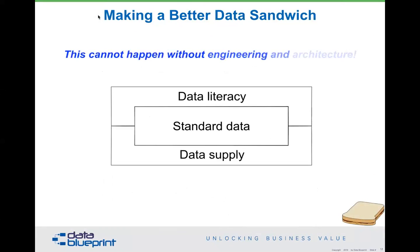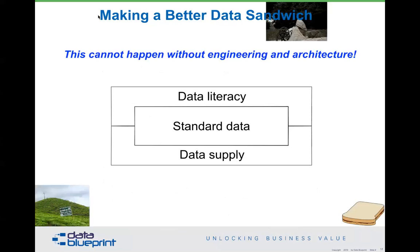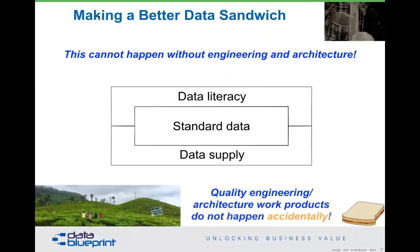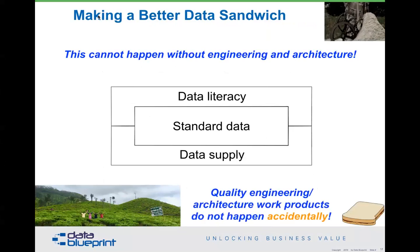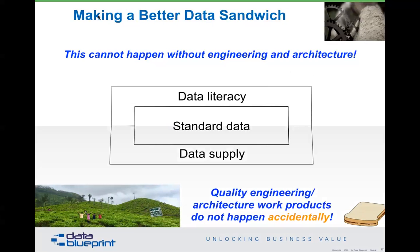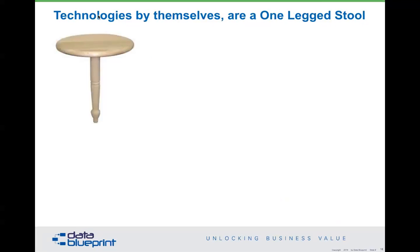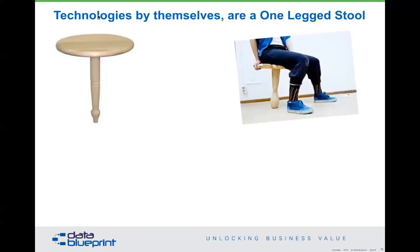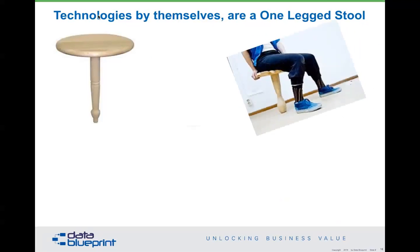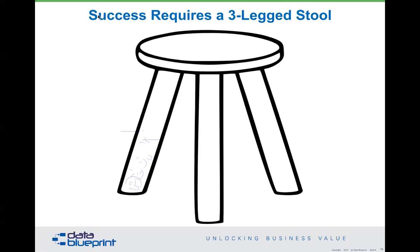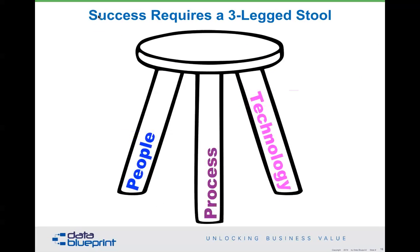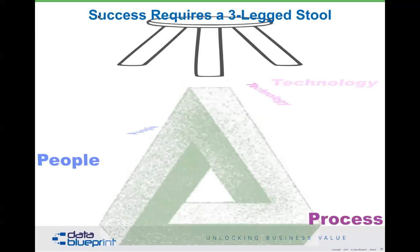I like to talk about making a better data sandwich, composed of three parts: data literacy among your folks, a data supply that's uneven, and individual uses of standards. This cannot happen without engineering and architecture — quality engineering and architecture work products do not happen accidentally. Technologies by themselves are a one-legged stool. Three-legged stools are the minimum you need, and of course the three legs are people, process, and technology — which should be interrelated as much as possible, because only when you have them working together do you end up with good success.